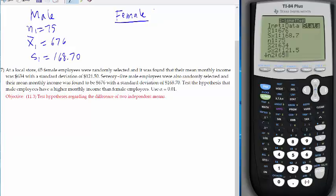And s1, which is the standard deviation, is 168.70. For female, if you guys decide to label female as one, then rather than testing that mu1 is bigger than mu2, if you switch the numbers and female will become one and male is two, you have to test that mu1 is less than mu2. If the male are higher than the female, that means the female are lower than the male. And n2 is 65, x2 bar is 634, and s2 is 121.50.